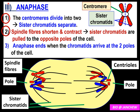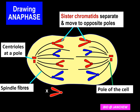When drawing anaphase, the spindle fibers pull the centromere first, followed by the two arms of the sister chromatid. Therefore, if you draw the centromere lagging behind with the two arms going first, that is wrong. The correct way is to draw with the centromere pointing towards the poles — the V shape pointing towards the pole. Make sure you label all the parts in your drawing.